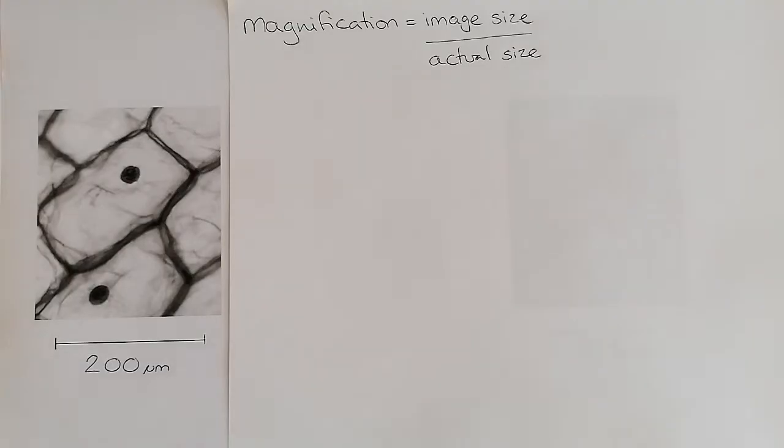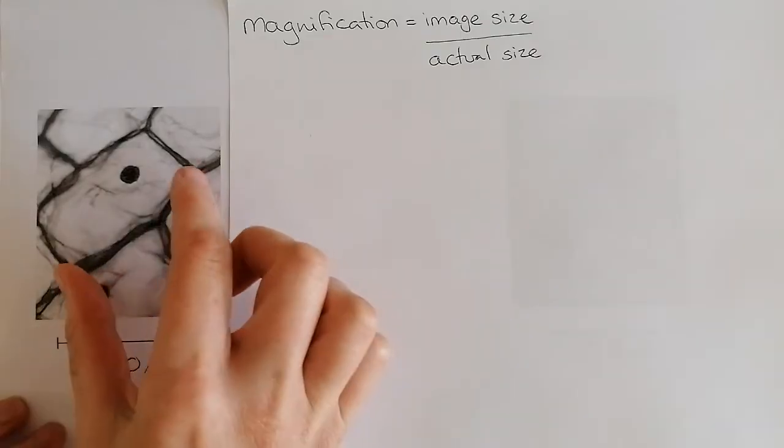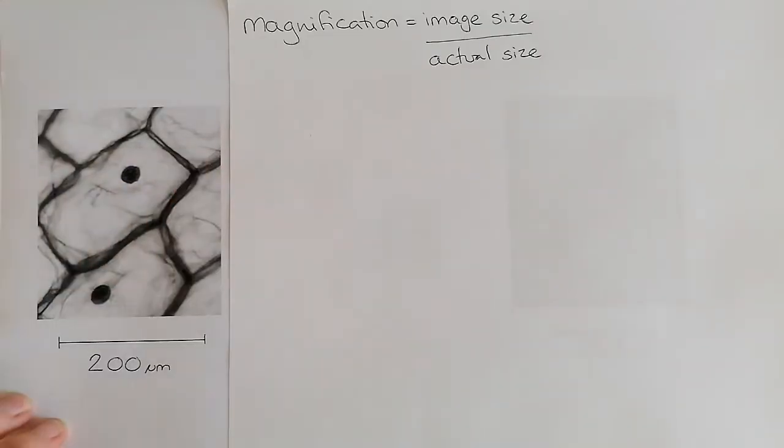What it means is the magnification number, the number of the amount of times we have zoomed in, is calculated by measuring the size of the picture and dividing it by how big that cell is in real life.